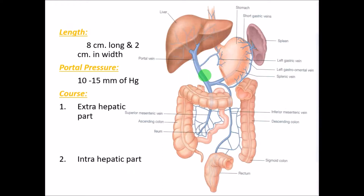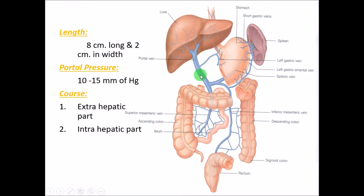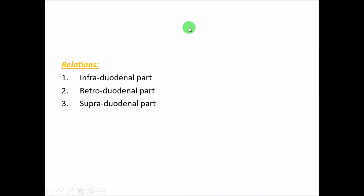The course of the portal vein is both extrahepatic and intrahepatic. The extrahepatic part is outside the liver — the portal vein and its initial branches — while the intrahepatic part describes how it divides into branches and further smaller branches to supply the liver.